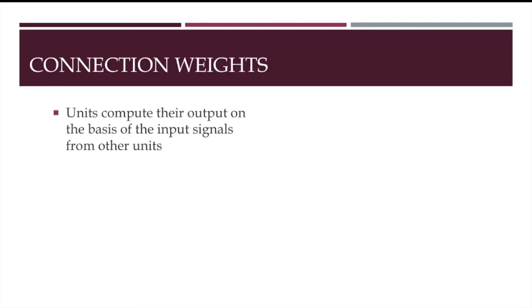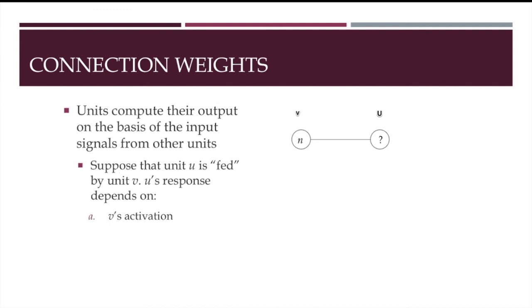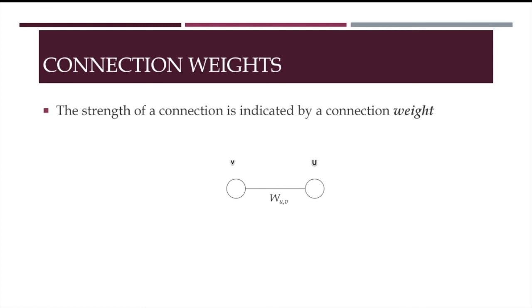To repeat, units compute their output on the basis of the input signals from other units. So suppose that a unit U is fed by unit V. U's response depends on two things. The first one is V's activation level, which we represent here by the number N. And the second is the strength of the connection between V and U. The strength of the connection is referred to as its weight, and is represented by a lowercase w, usually with two sub-indices corresponding to the two participating units.